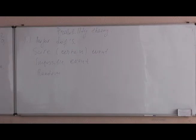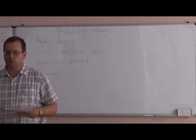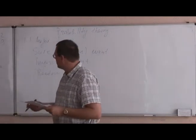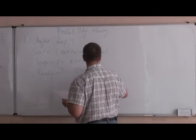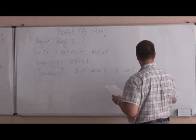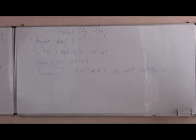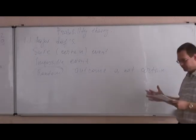The outcome of such events cannot be predicted with certainty — the event happened, but what kind of event happened we don't know. This is what is called the random event: outcome is uncertain. I think you should know all of this. And again, for many of you, this lecture is not about probability theory — this lecture is about language which we use to describe different notions in probability theory.